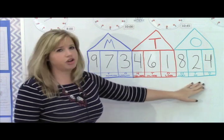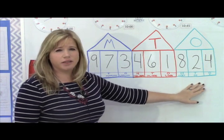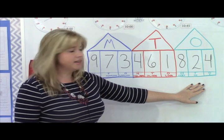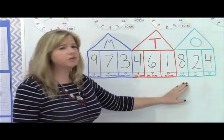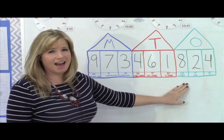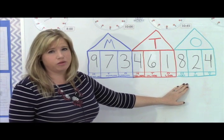The second thing that's really important that your child understands is that as you go from right to left, each place value is ten times the amount of the place value before it.